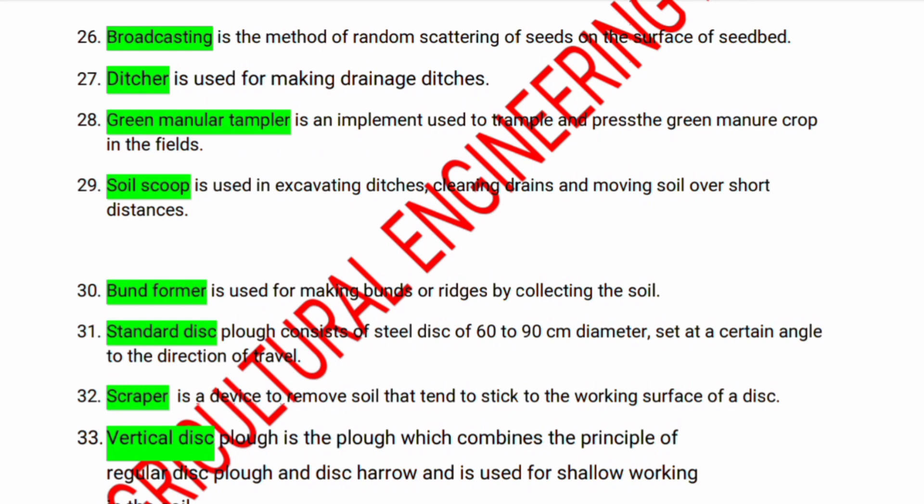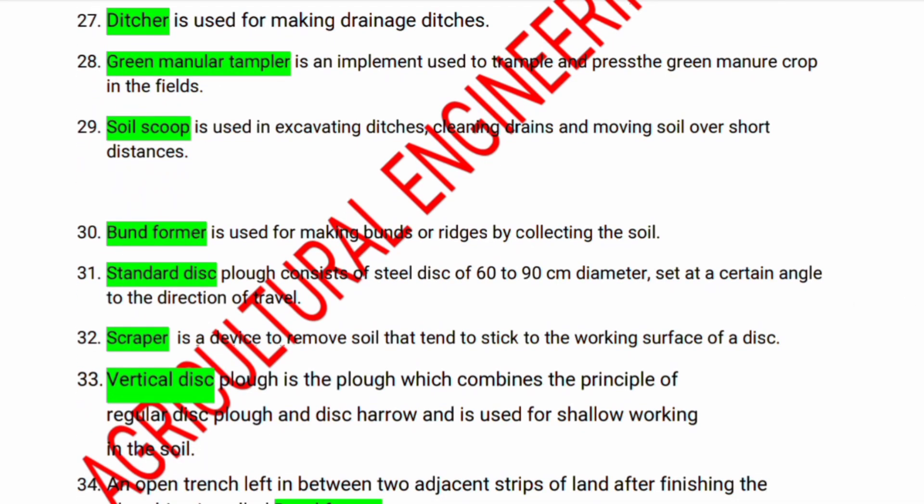The standard disk plough consists of a steel disk of 60 to 90 centimeters diameter, set at a certain angle to the direction of travel. Disk scraper is a device to remove soil that tends to stick to the working surface of the disk. Vertical disk plough combines the principle of a regular disk plough and disk harrow, used for shallow working in the soil.